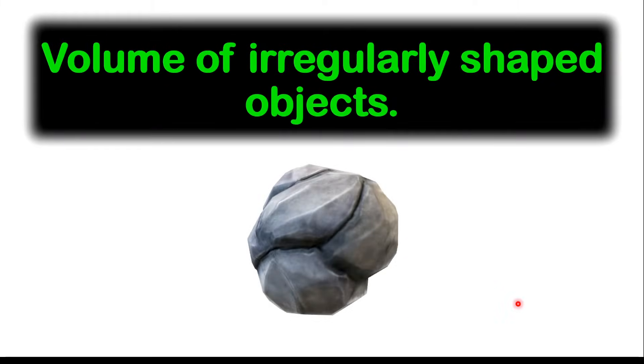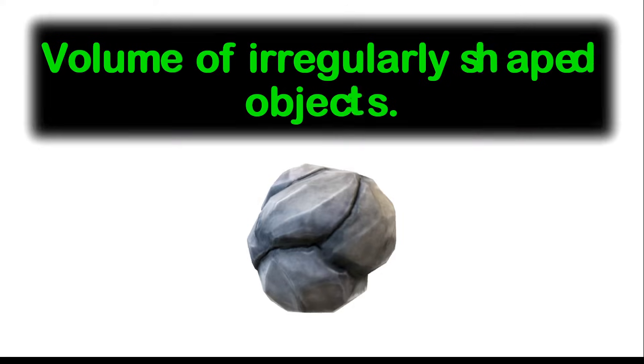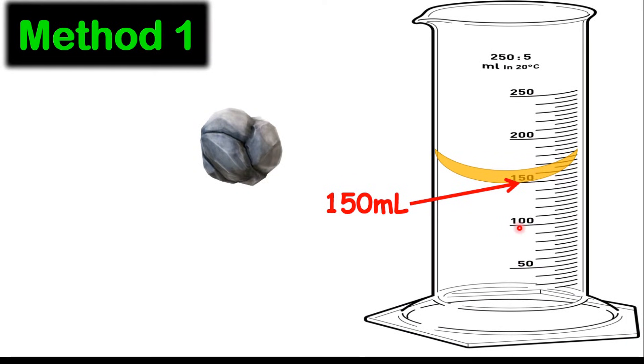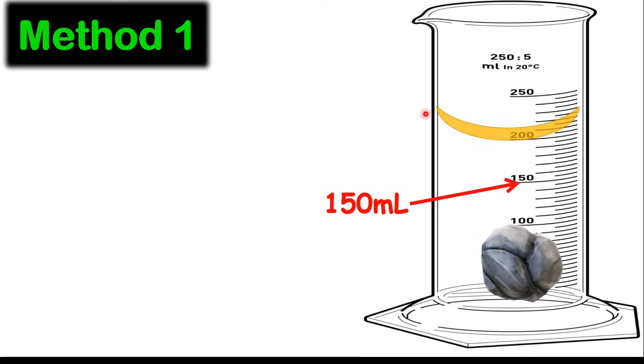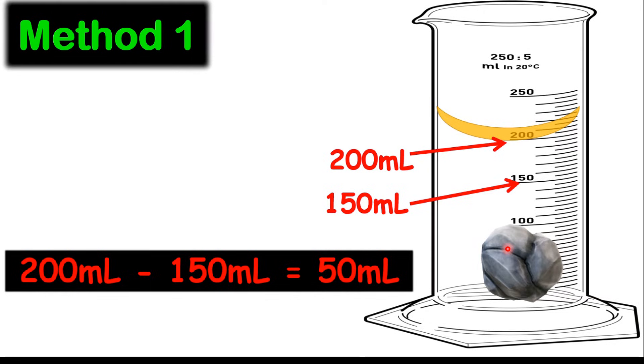To measure the volume of irregularly shaped objects, it's very difficult to measure the length times width times height or even measure radius. For example, if you have a stone, it's not regularly shaped. In method one, we pour some liquid into a measuring cylinder and take that measurement. For example, this measurement is 150 mL. Next, put this carefully into your measuring cylinder. Notice the volume starts to rise, and now our new volume is 200 mL. To calculate the volume of this rock, we take away the first volume from the final volume. Hence, we'll have 50 mL for that rock.